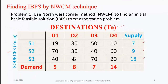The IBFS will be found using the Northwest Corner Method (NWCM). The given statement says to use NWCM to find an initial basic feasible solution, so in this case we need to use NWCM only.